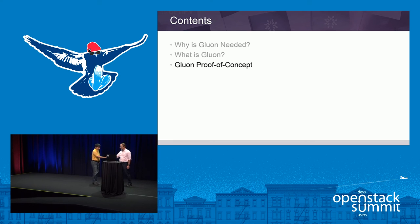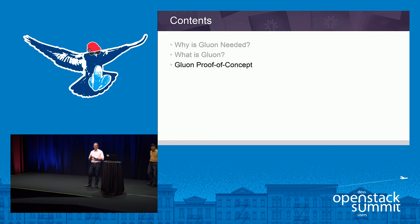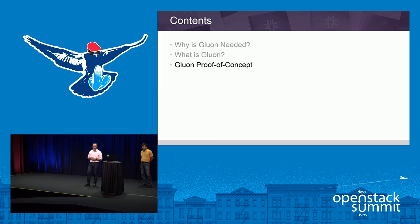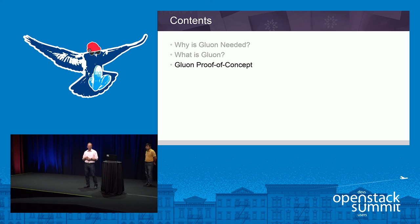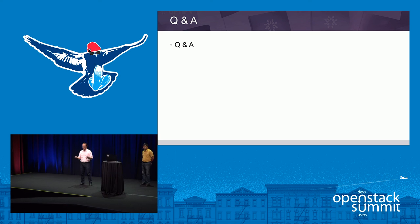We've actually worked very closely with a number of vendors. We have Juniper, Ericsson, Nokia, Cisco, and now Huawei all helping us to make Gluon work. At least three of them have a demonstration of Gluon here, and at our booth we also have a demonstration of what Gluon looks like. This is a good example of community members working together to make something work. The real trick now is how we take it the next step, make it real, and get it implemented in a release of OpenStack.